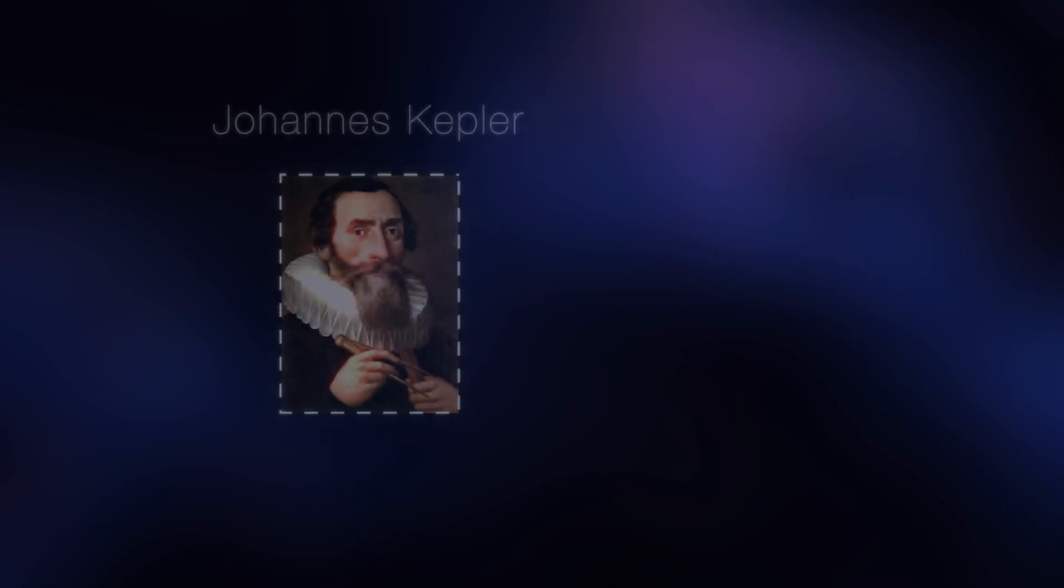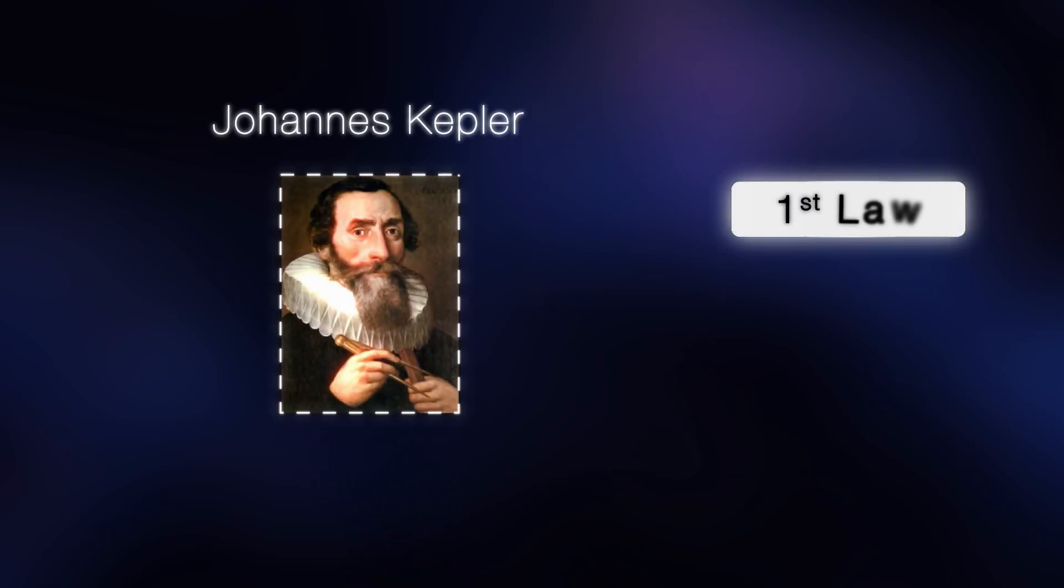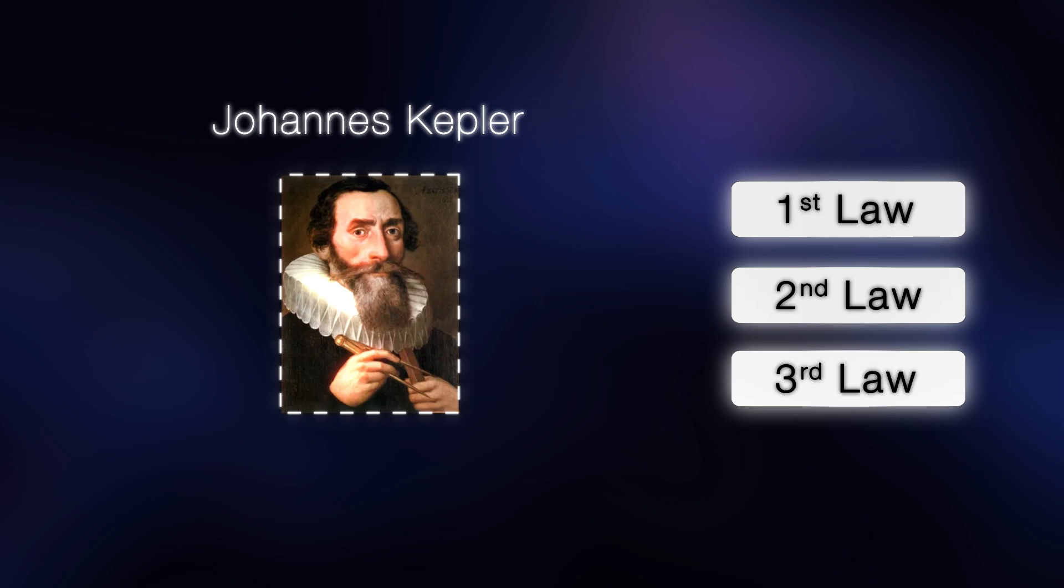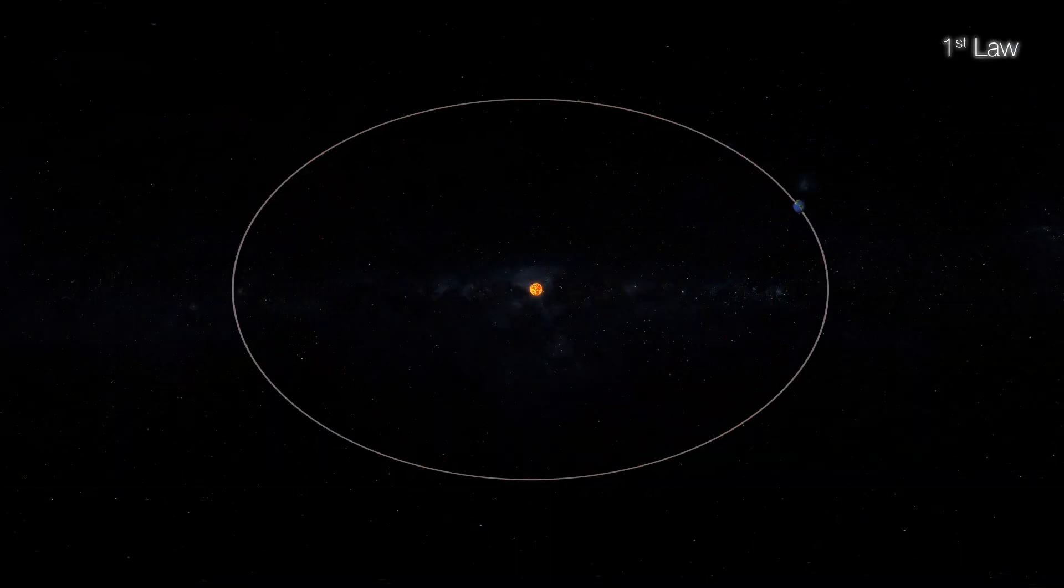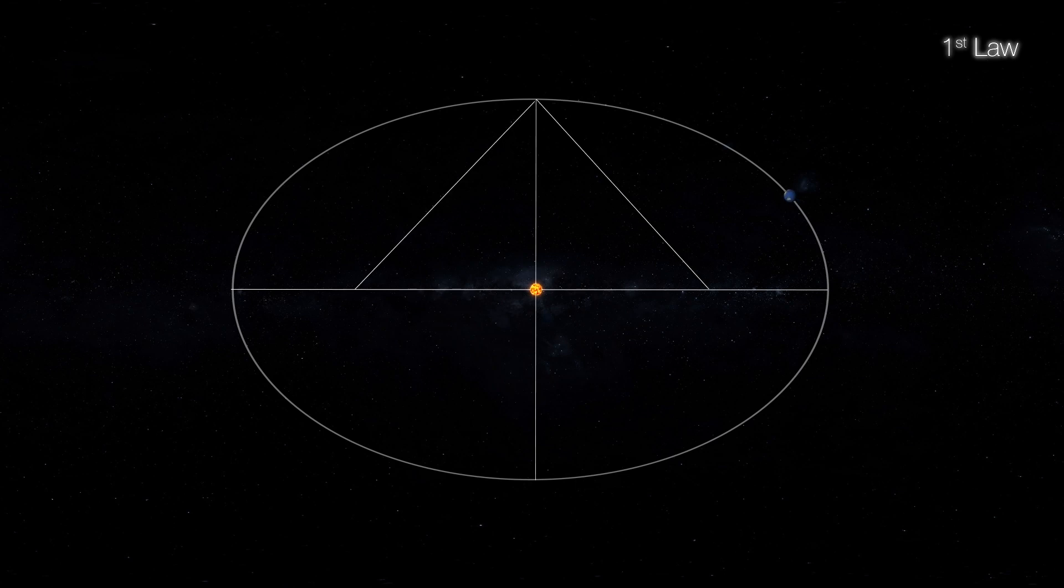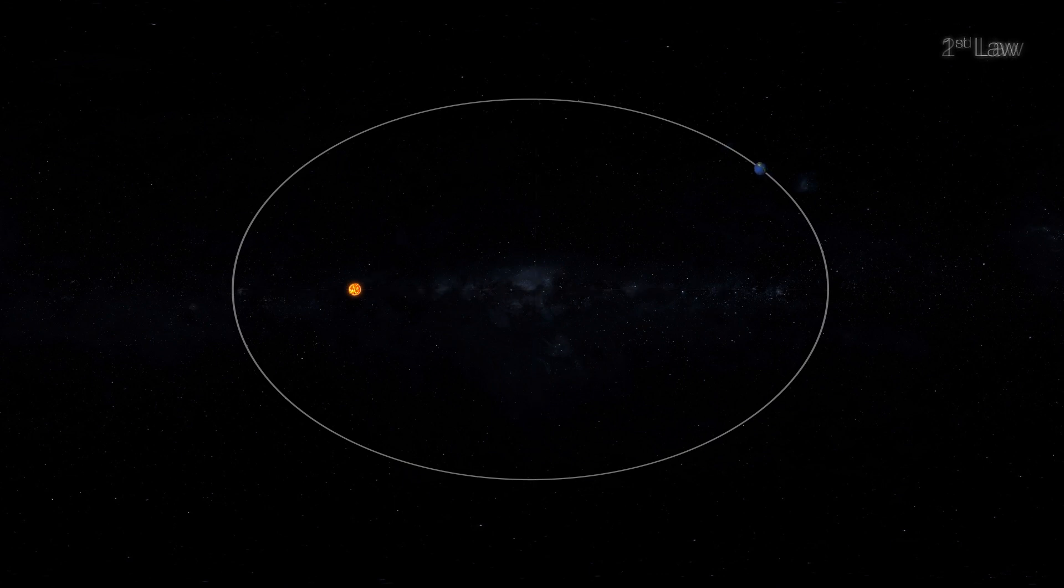Later, Johannes Kepler introduced the idea that planets orbit the sun in ellipses, not perfect circles, with the sun positioned off-center at one of the ellipses' foci. He further revealed that the speed of a planet's orbit varies—it moves faster when closer to the sun and slower when further away, sweeping out equal areas at equal times.